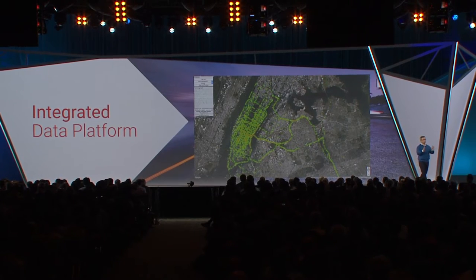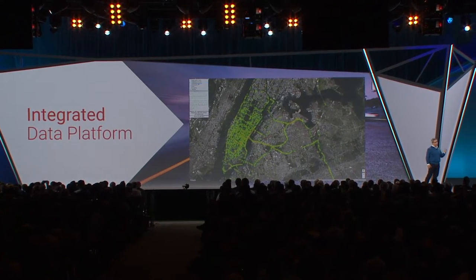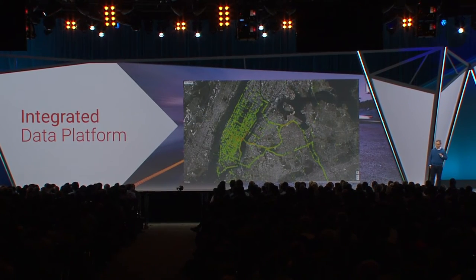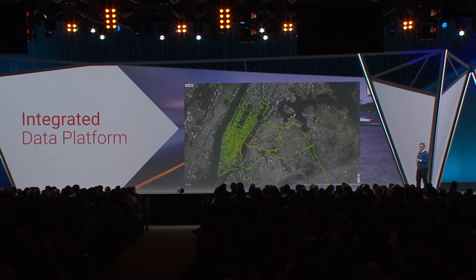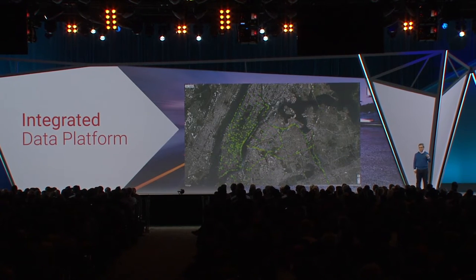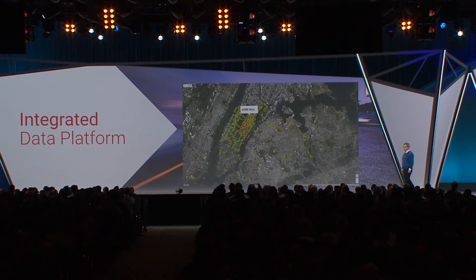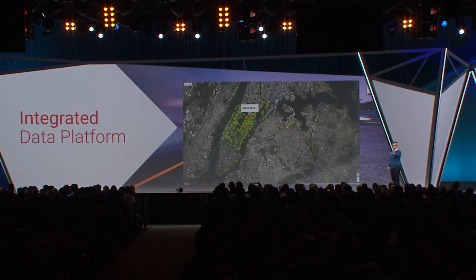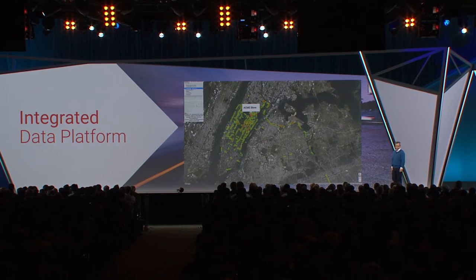Now, what if I want to look at one particular customer who's placed ads with us — a particular agency? We can filter that Dataflow, and now the visualization will update so that we're only seeing ads that are being placed for a specific store. In this case, the Acme store — it looks like it's on the Upper East Side. And sure enough, we see that we're placing ads roughly geographically near the store.